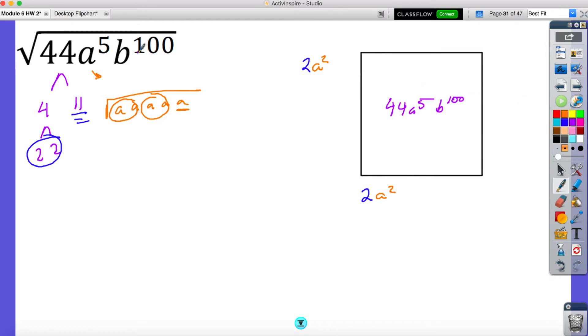Now the next thing is I have a 100 b's. I really don't want to write 100 b's out. So remember, all I'm doing is dividing by 2. So 100 divided by 2 is 50. So 50 go here. 50 go here.